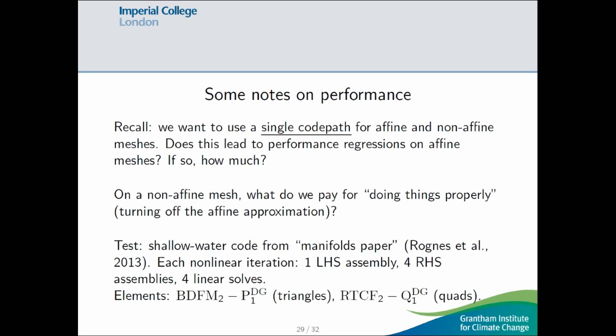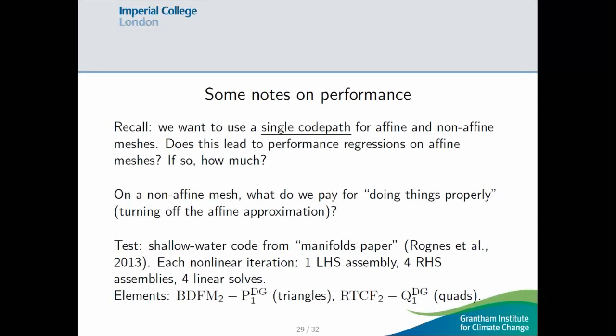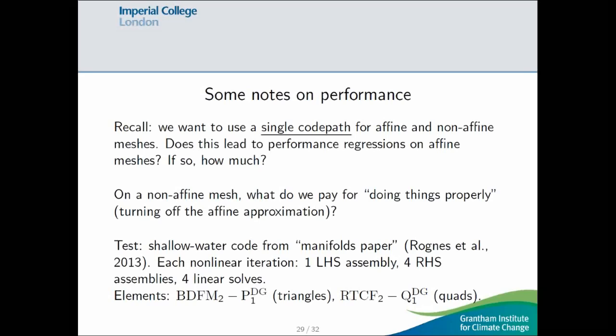So, I'll spend the rest of this talk just saying a bit about performance. So, recall that to ease the maintenance burden, it'd be quite nice if we could just use a single code path for both affine and non-affine meshes. So, does this lead to any sort of slowdown? If so, how much? And, on a non-affine mesh, such as a mesh of quadrilaterals, how big a price do we pay for doing things properly? So, the test code I use for this is just some shallow water code. It appears in the manifold paper. And I'm going to do this on triangles and quads with elements between linear and quadratic.